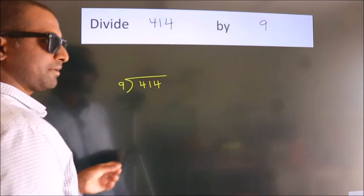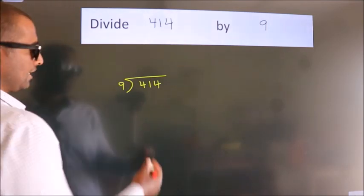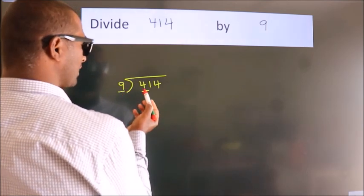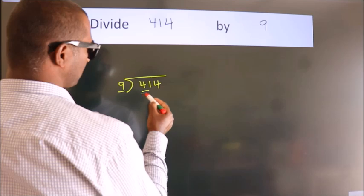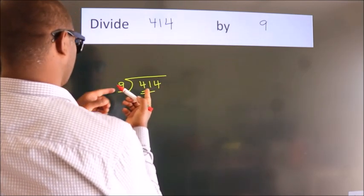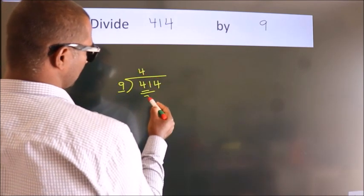This is your step 1. Next, here we have 4, here 9. 4 smaller than 9. So we should take two numbers, 41. A number close to 41 in 9 table is 9 times 4, 36.